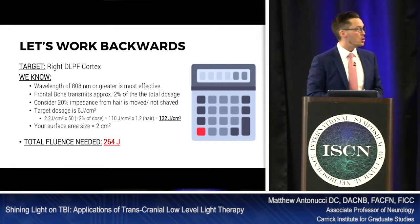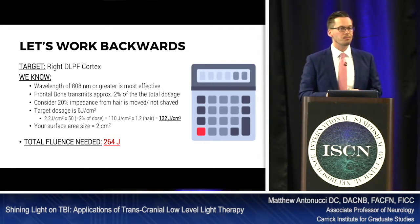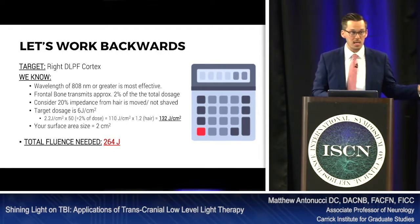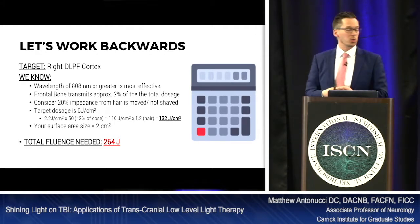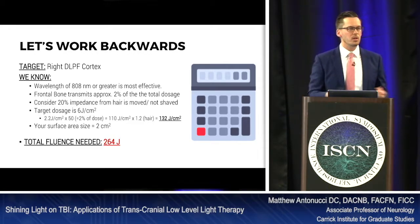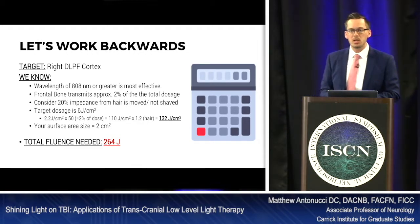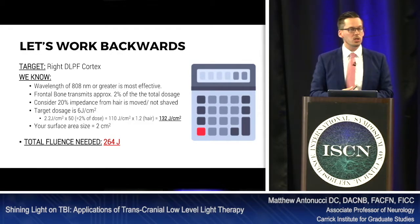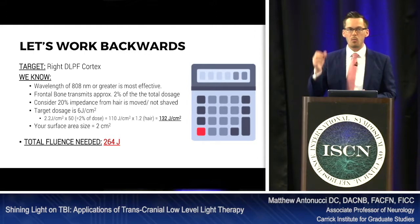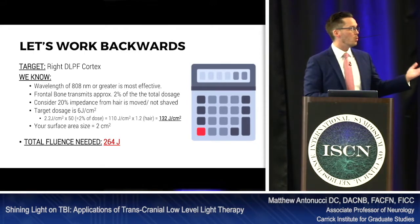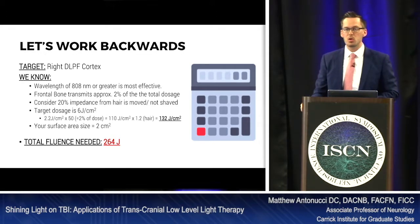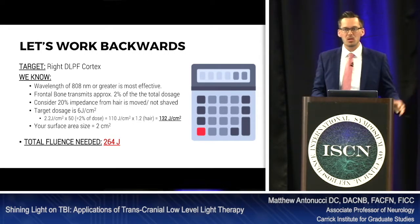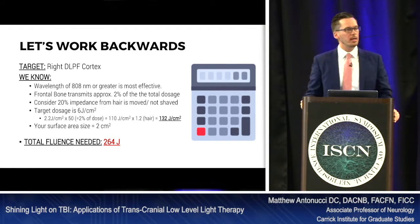The math: our target fluence is 2.2 joules per centimeter squared. Since only 2% of the dose gets through, we multiply by 50, giving 110 joules per centimeter squared. Adding 20% for hair and follicle interference brings us to 132 joules per centimeter squared. If our treatment surface area is two centimeters squared — roughly the aperture of the light source — we double that dose, arriving at 264 joules total.